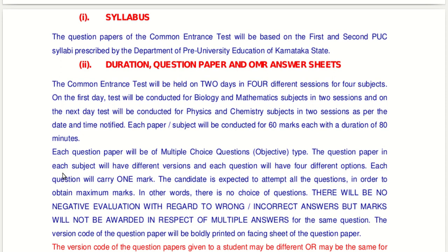The candidate is expected to attempt all questions to obtain maximum marks. There is no choice of questions. There will be no negative evaluation or negative marks if the student commits a mistake, gives an incorrect answer, or doesn't answer. In case the student marks multiple answers for the same question, all will be considered as zero marks, but there won't be any negative marks.